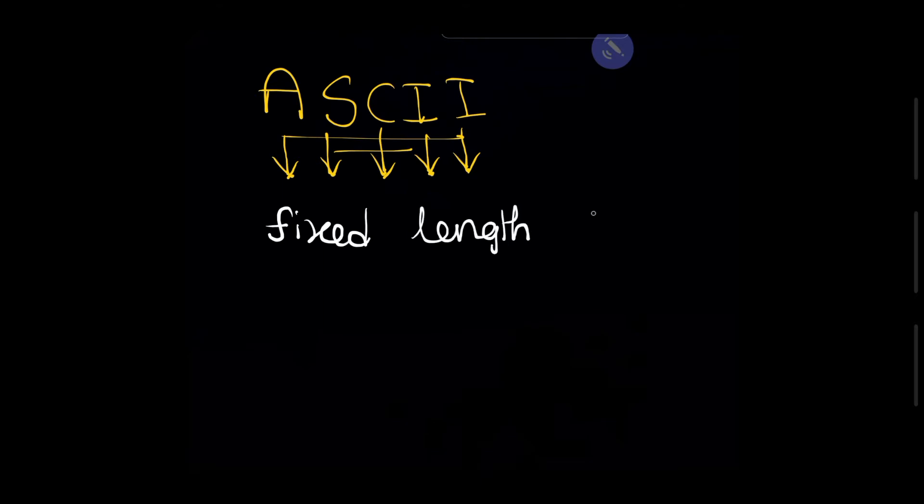Hi friends, in this video I'm going to talk about ASCII code system. So what is the meaning of ASCII? American Standard Code for Information Interchange. So this ASCII code is a fixed length code.